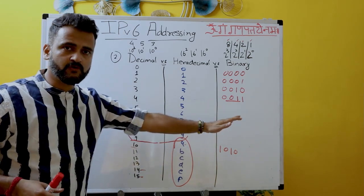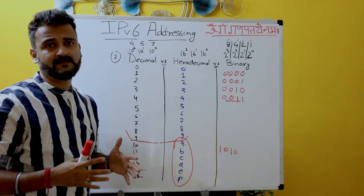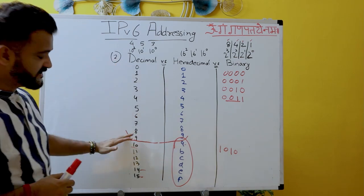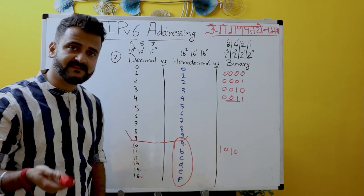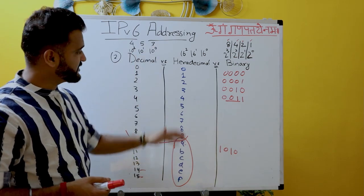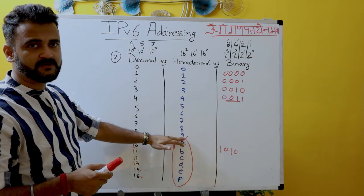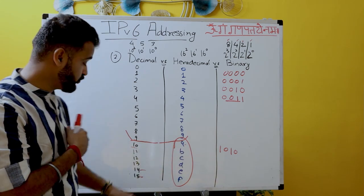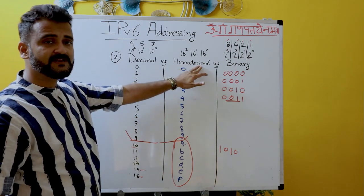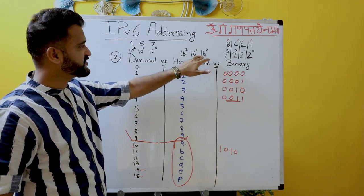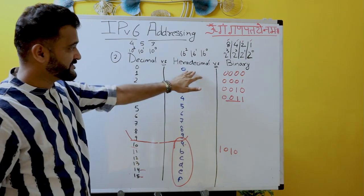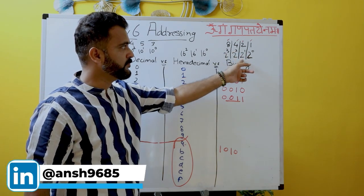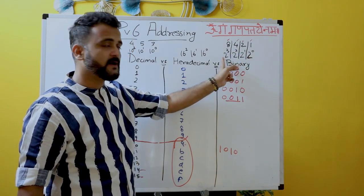If you try to denote binary in decimals, it takes a lot of space and you cannot compress it. That's why hexadecimal was created — it is alphanumeric, starting from 0 to 9, then extending with A, B, C, D, E, F to denote values up to 15. Hexadecimal is base 16, binary is base 2, and decimal is base 10. For example, decimal 453 equals 4 × 10^2 + 5 × 10^1 + 3 × 10^0.